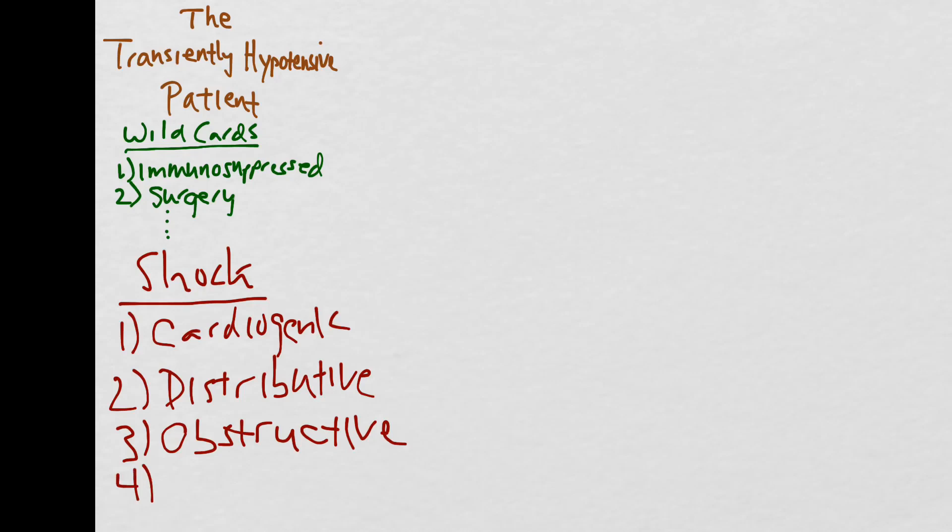The fourth type of shock that we'll talk about will be hypovolemic shock. Maybe your patient is having intra-abdominal bleeding from minor trauma that they may have not reported to you, or maybe your patient ate something bad and as a result is having explosive diarrhea and vomiting.